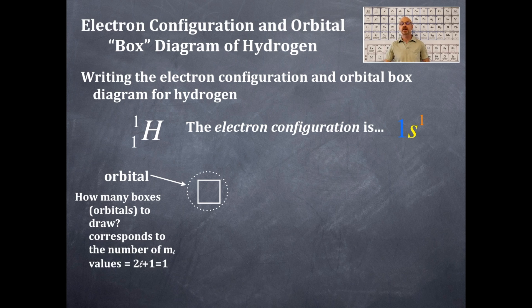So how many boxes or orbitals do I draw? And this corresponds to the m sub l values, which is 2l plus 1. That, in this case, it is equal to 1. So therefore, one box.